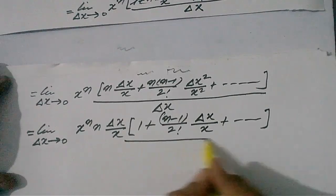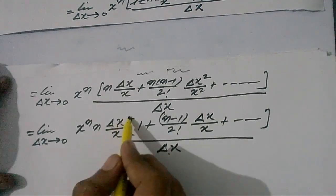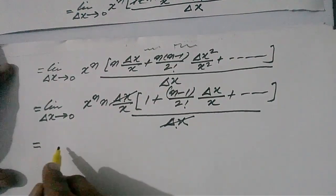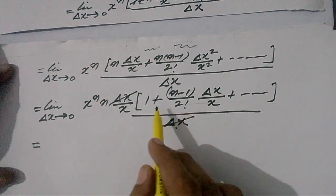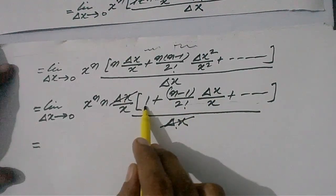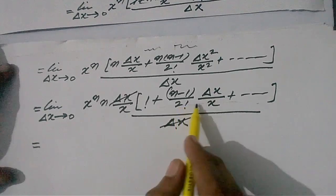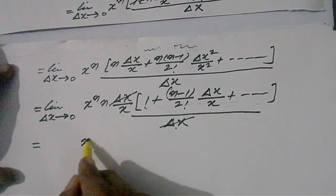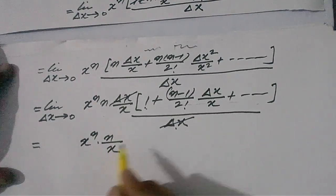In the denominator we have delta x. This delta x is cancelled by the delta x we took out. Now applying the limit, we substitute delta x equal to 0 in this expression. Every term of this expression will have delta x except the first term, which is 1. So applying the limit delta x tends to 0, each and every term becomes 0 except the first term, and we have only x raised to the power n into n upon x into 1.